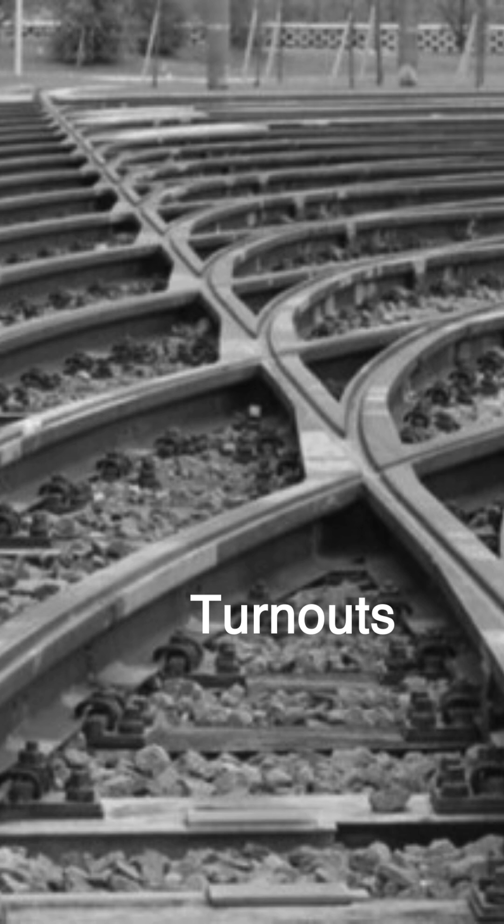Chapter 3: Turnouts. Covers the design, function, and types of turnouts and switches used for routing trains from one track to another. Chapter 4: Stations. Explores station design, classification, facilities, and operational considerations for passenger and freight traffic.